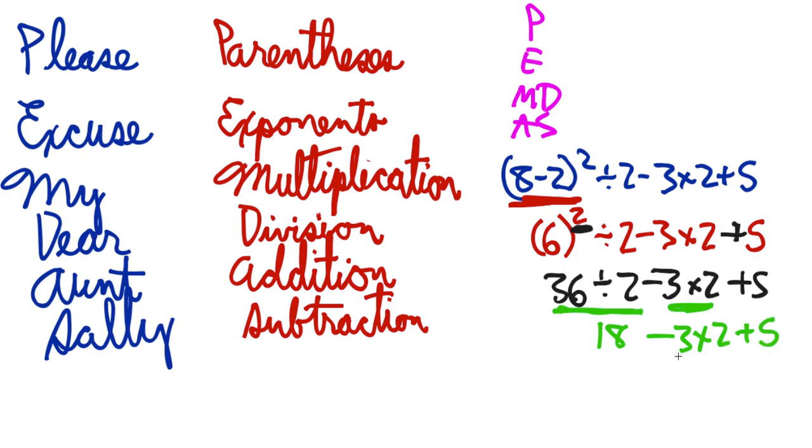Now I will do the 3 × 2. I'm going to keep everything else. I'm not going to drop it. It's 18 minus, and then 3 × 2. You probably know that's already 6, and then plus 5.